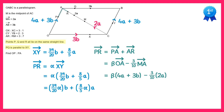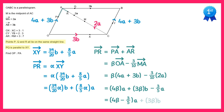Expanding the brackets: 4 beta lots of A plus 3 beta lots of B, then minus 6 tenths — simplified to 3 fifths — of A. Two of these involve A, so simplifying we end up with (4 beta minus 3 fifths) lots of A plus 3 beta lots of B. This is a second way of writing the vector PR.